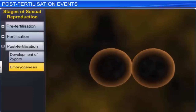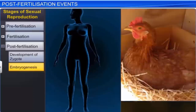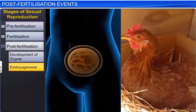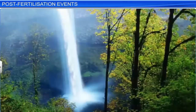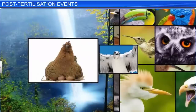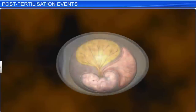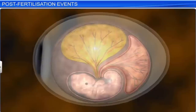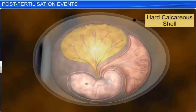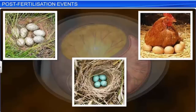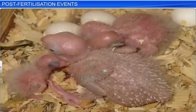Embryogenesis, which occurs in almost all animals, can take place inside or outside the body of the female. In oviparous or egg-laying animals, such as reptiles and birds, the process of embryogenesis takes place outside the body of the female — that is, in eggs laid by these animals. The eggs, covered by a hard calcareous shell, are usually laid in a sheltered place, such as pens and treetops, to keep them safe from predators. Once the incubation period is over, the young ones hatch from these eggs.